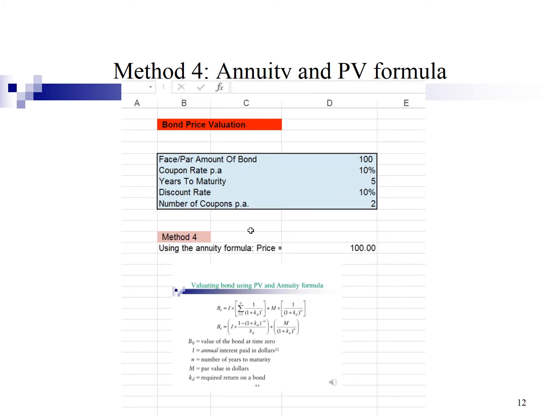Method 4 is about manually typing in the present value and annuity formula at one go. Here is the formula. The formula is also shown in this slide here. I seldom use this method. It is more for your knowledge.